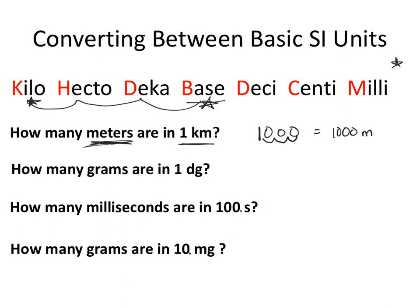For the next example, we have one decigram and want to know how many grams are in a decigram. Grams are going to be the base unit for this particular setup — though remember, if asked for the SI base unit for mass, the answer is kilograms. Starting at decigrams, we move one space to the left to reach the base unit, giving us 0.1 grams.